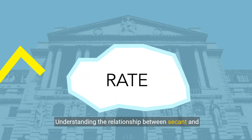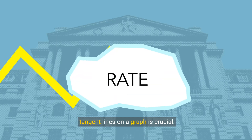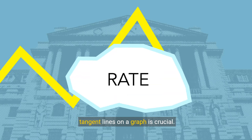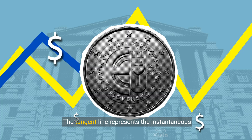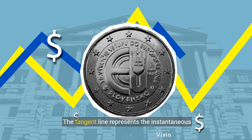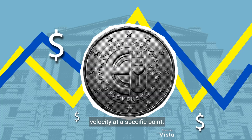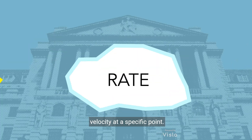Understanding the relationship between secant and tangent lines on a graph is crucial. The tangent line represents the instantaneous velocity at a specific point.